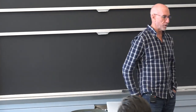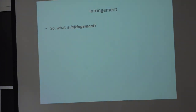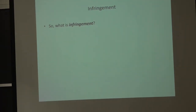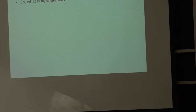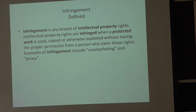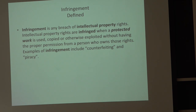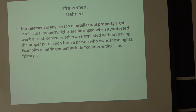Let's talk a little bit about infringement. We've talked about creating an intellectual property right, whether it be a patent, a trademark, a copyright, or a trade secret. But what happens when those rights are violated? Infringement, simply defined, is any breach of an intellectual property right. Intellectual property rights are infringed when a protected work is used, copied, or otherwise exploited without having the proper permission from the person who owns the rights or the license to those rights.